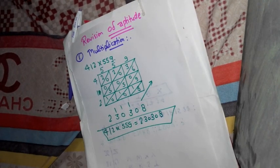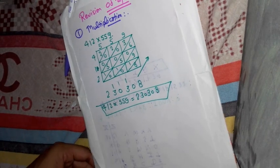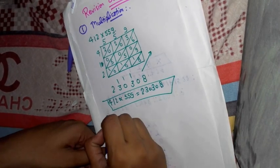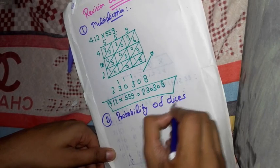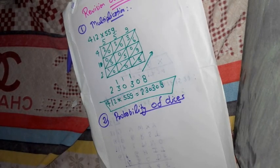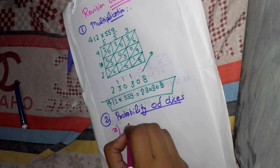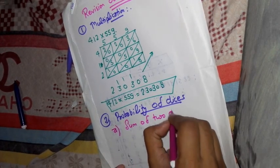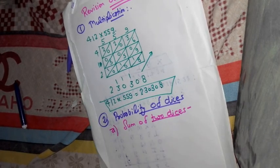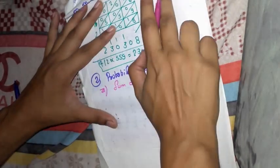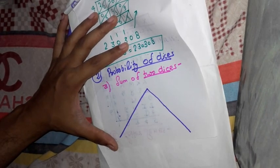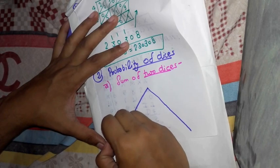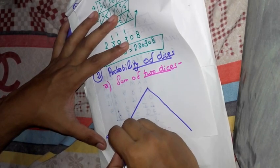By that you can multiply more and more numbers in very easy way. Now the next topic is probability of dice. Second one is probability of dice. In that, first one is sum of two dice.